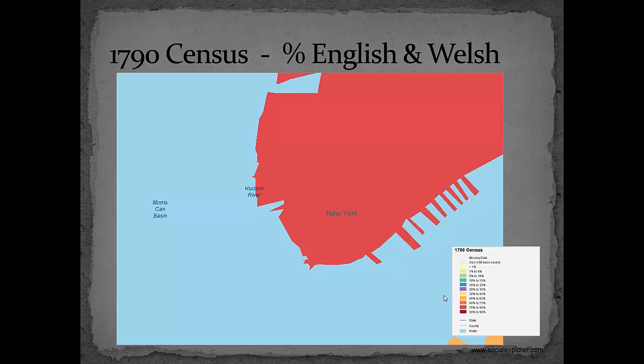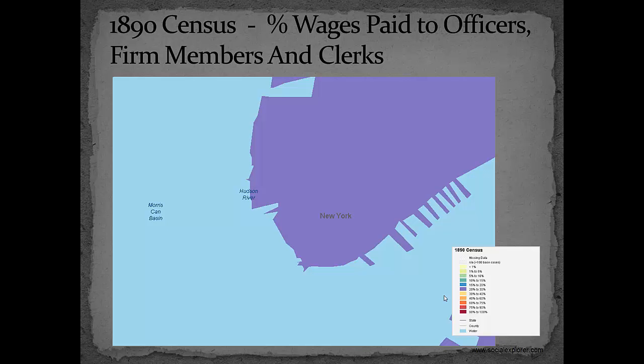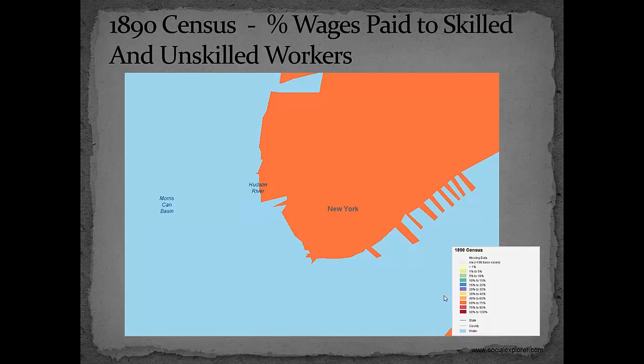Lower Manhattan is one of the oldest neighborhoods in America, initially English and Welsh. It was largely a working-class neighborhood up through the beginning of the 20th century, but also the site of the New York Stock Exchange, which dates back to 1792, and the site of Federal Hall, where George Washington was inaugurated.